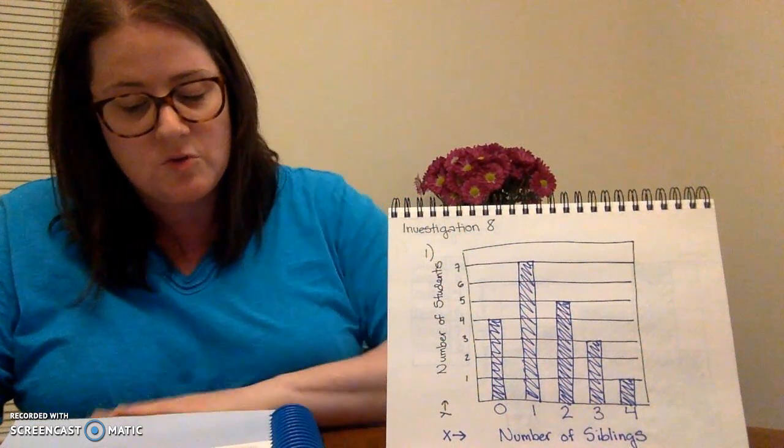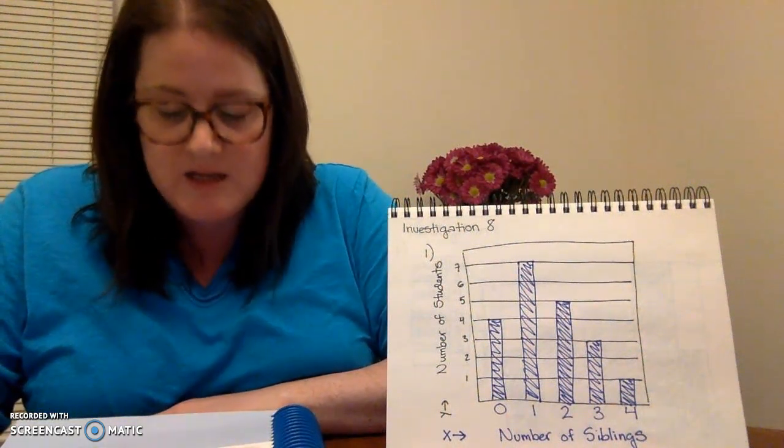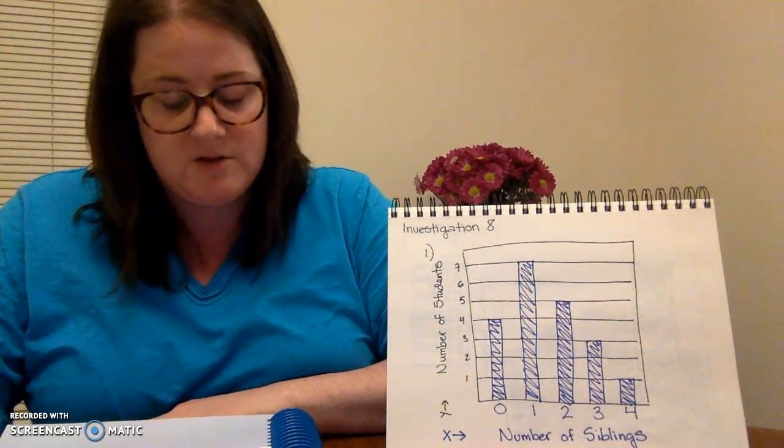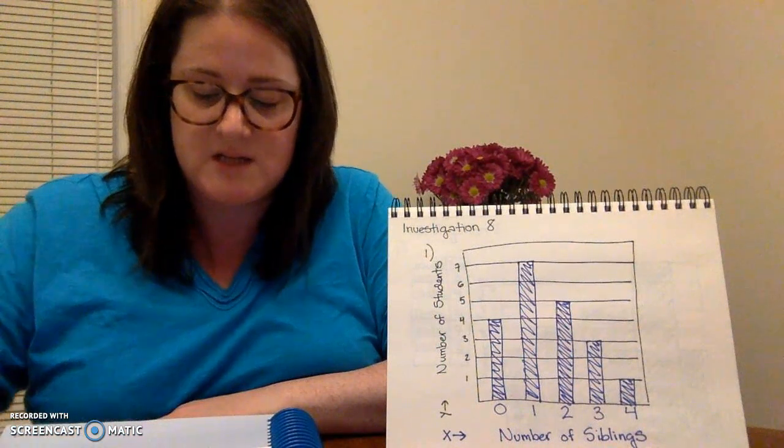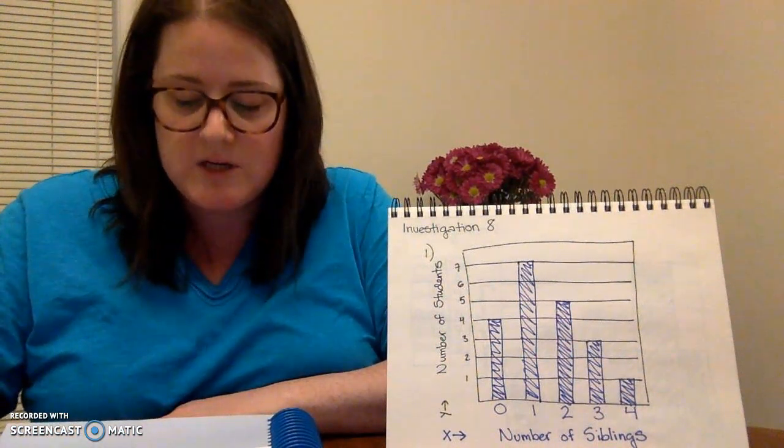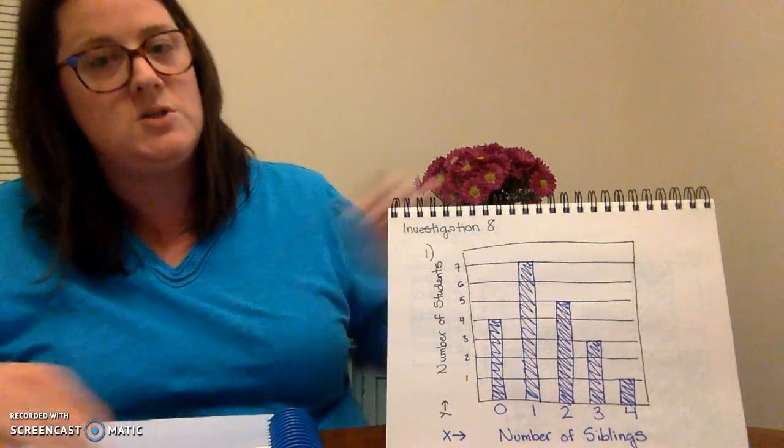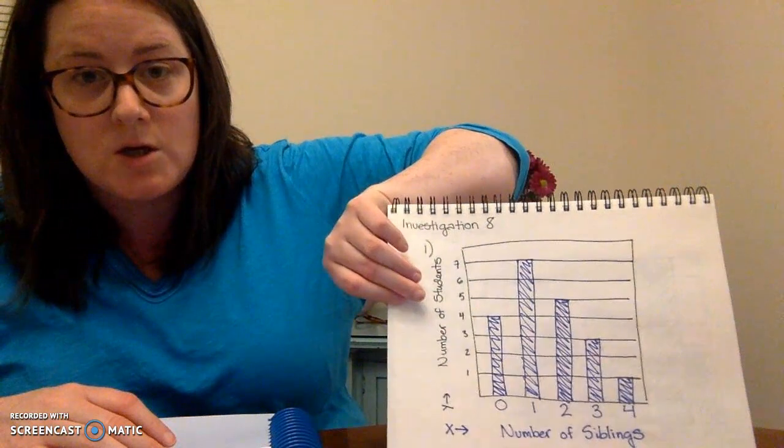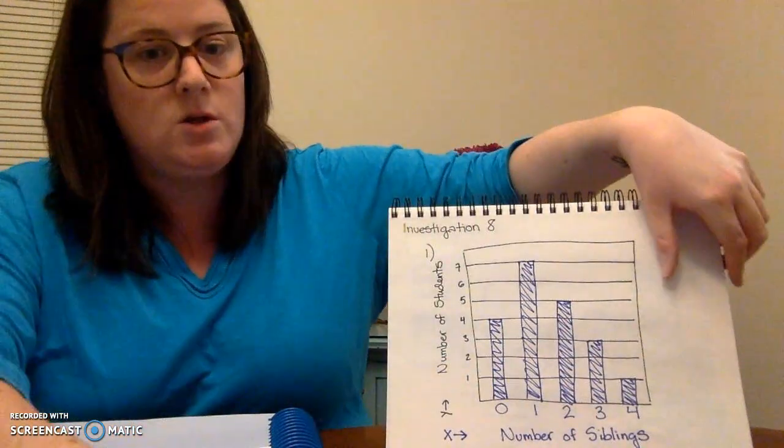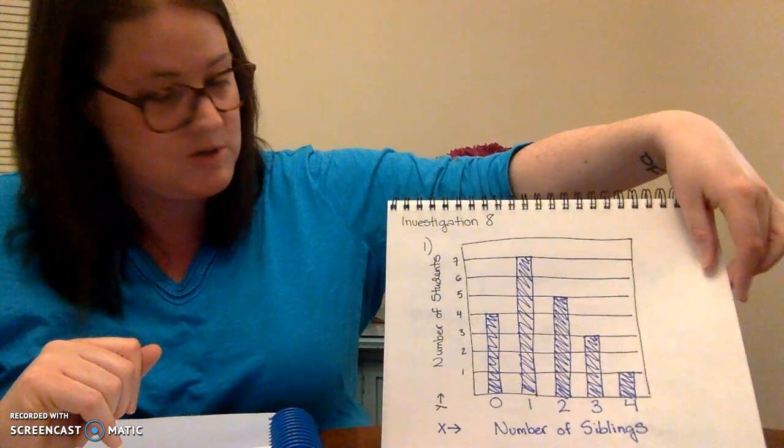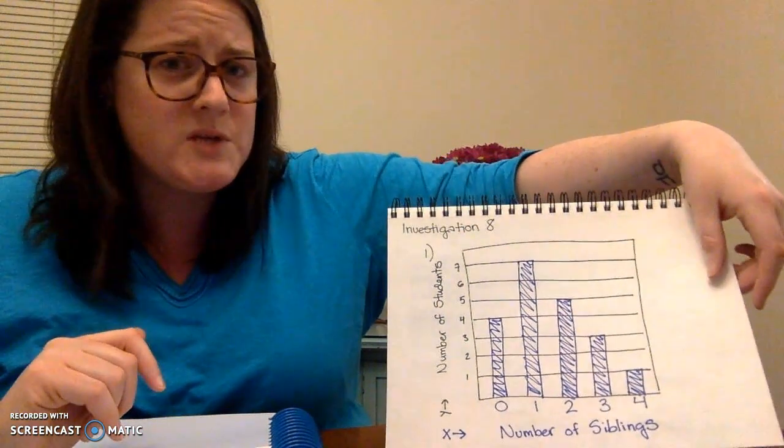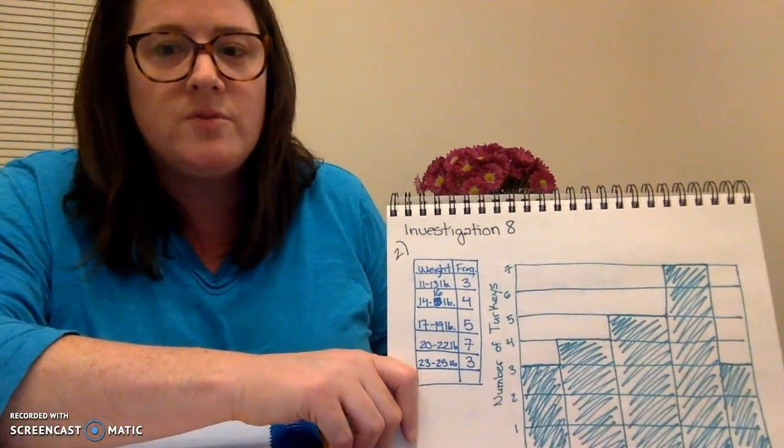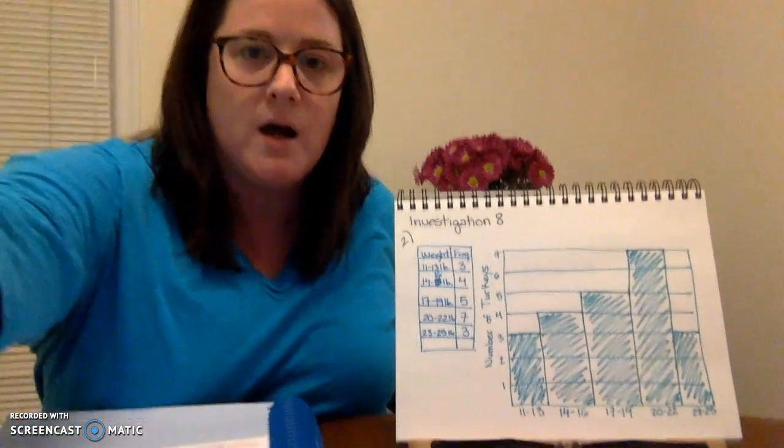For number 2, we need to create a frequency table and histogram for the turkey weight data using these weight intervals: 11 to 13 pounds, 14 to 16 pounds, 17 to 19 pounds, 20 to 22 pounds, and 23 to 25 pounds. So I know that you're going to pause here, and you are going to make a frequency table and attempt a histogram. And once you've done that, you're going to unpause, and you are going to see that your information looks exactly like mine.